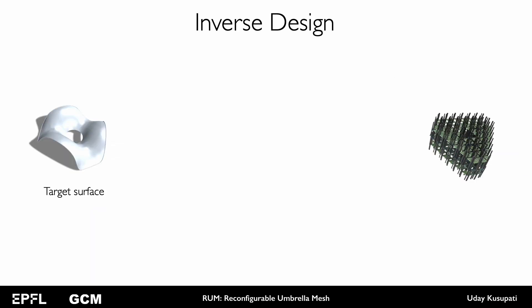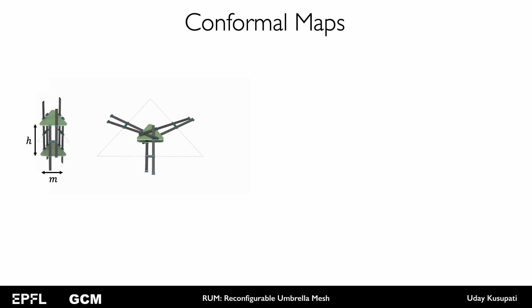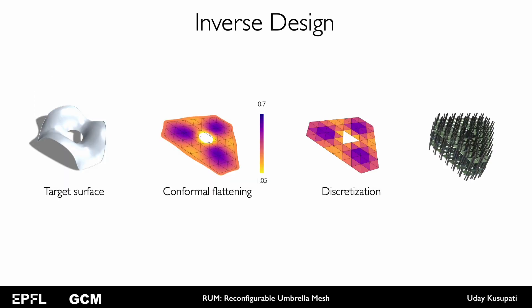So how did we compute the height distributions for a desired shape? We employ surface flattening techniques from differential geometry to model the deployment transformation. In particular, we use conformal flattening. Notice that a single cell expands isotropically in plane, whose expansion factor can be computed as a function of the cell height. Conformal transformations consist of local rotations and uniform scaling but no shearing. We have this nice relation between the spatial variation of the expansion factors with the Gaussian curvature of the surface. This also provides an idea about the shape space of RUMs. The higher the local variation in expansion factors, the larger the Gaussian curvature we can express. We discretize the conformal flattening and translate the local expansion factors to cell heights.